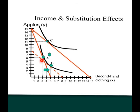But moving the rest of the way out to point C is actually in the opposite direction—we move back to a quantity of four of second-hand clothing. The income effect is a move from five to four. This shows us that second-hand clothing is an inferior good. If the income effect moves in the opposite direction of the substitution effect, you have an inferior good. If they move in the same direction, you have a normal good.